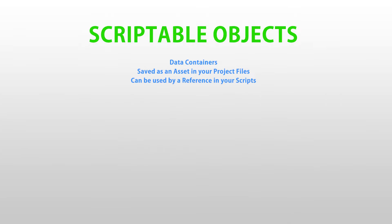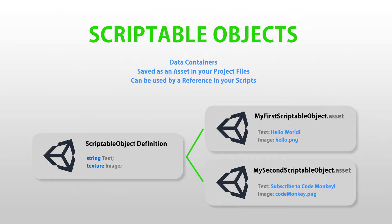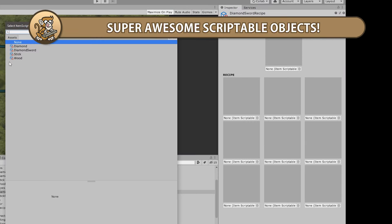In this video we're going to look at scriptable objects in Unity. These are objects you can create in your project files that can be used to store any kind of data and make your game more designer friendly. Extremely useful for storing level data, enemy data, weapon data, and just about anything.